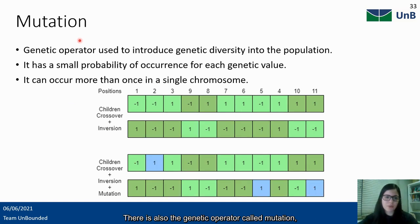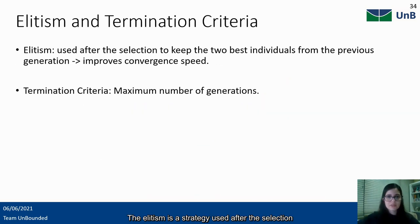There is also the genetic operator called mutation, and it is used to introduce genetic diversity into the population. It has a small probability of occurrence for each genetic value. In this work, the mutation probability was 1%. The elitism is a strategy used after the selection to keep the two best individuals from the previous generation, which is useful to improve the convergence speed. In this work, the criteria to stop the algorithm and return the solution was the number of generations. It was enough for the rate to stabilize to execute the algorithm for 35 generations in the worst-case scenario.